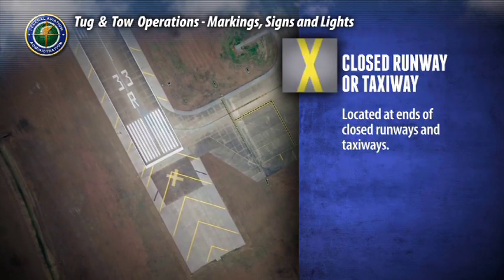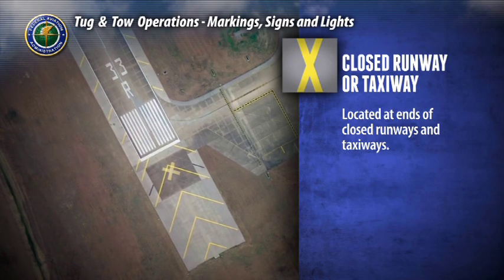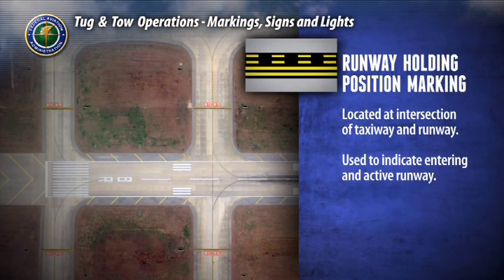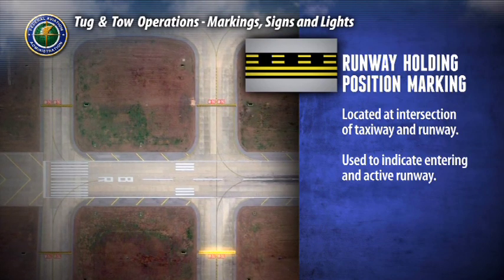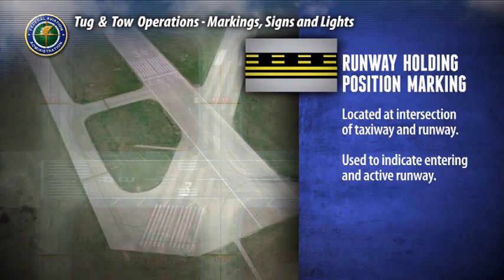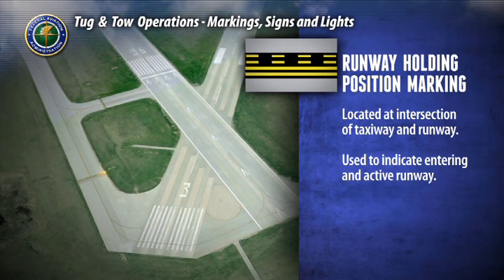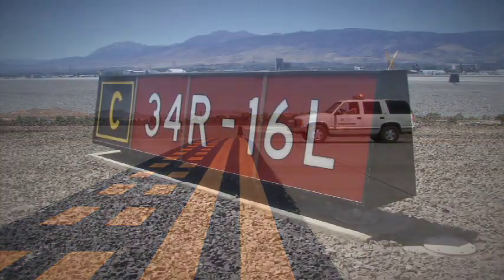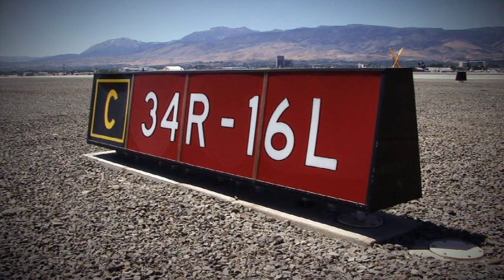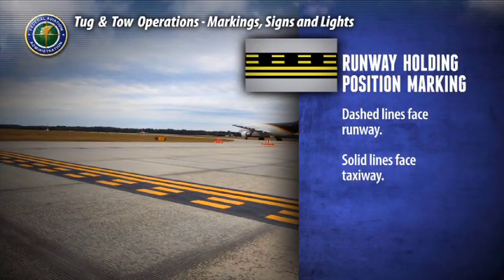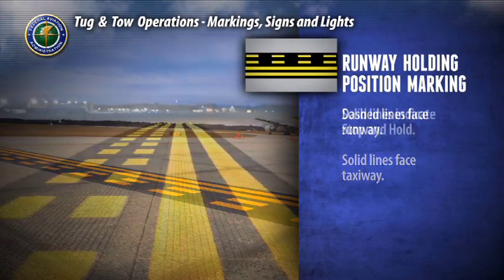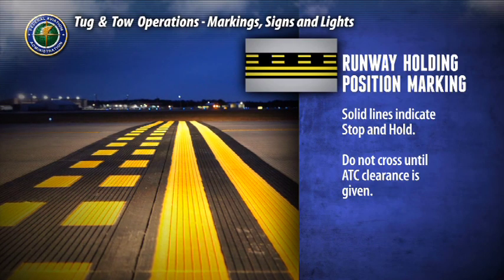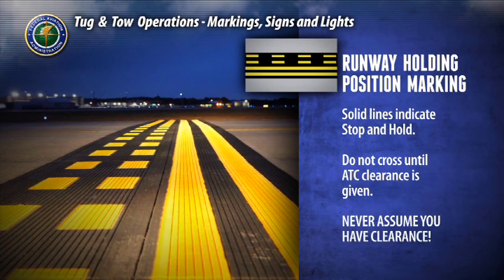A closed runway and taxiway marking is located at the ends of closed runways and taxiways. Movement beyond this marking is strictly prohibited. A raised lighted sign may also be used. Runway holding position markings are generally found at the intersection of a taxiway and a runway but may vary depending on specific airport layouts. These markings indicate that you are about to enter an active runway and will also be located with runway hold position signs. The dashed lines will be on the side toward the runway and the solid lines will be on the side toward the taxiway. The solid lines indicate that you are to stop and hold, not crossing until you receive clearance from air traffic control. Never assume you have clearance. Always wait for air traffic control instructions.